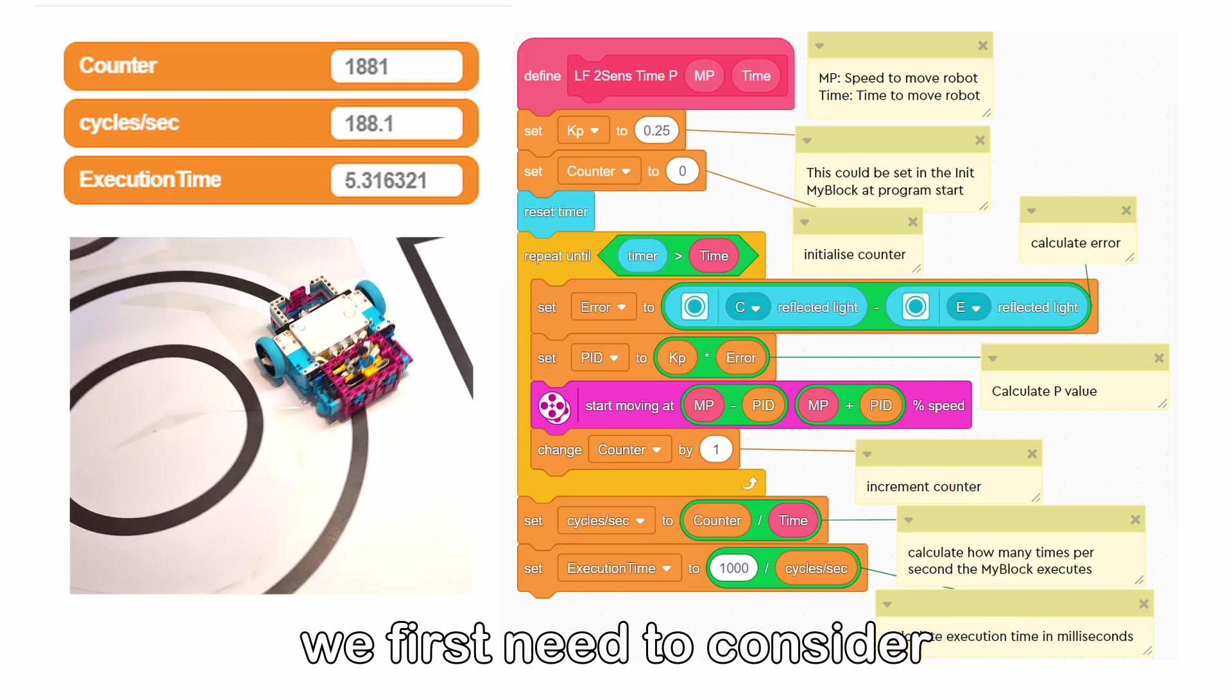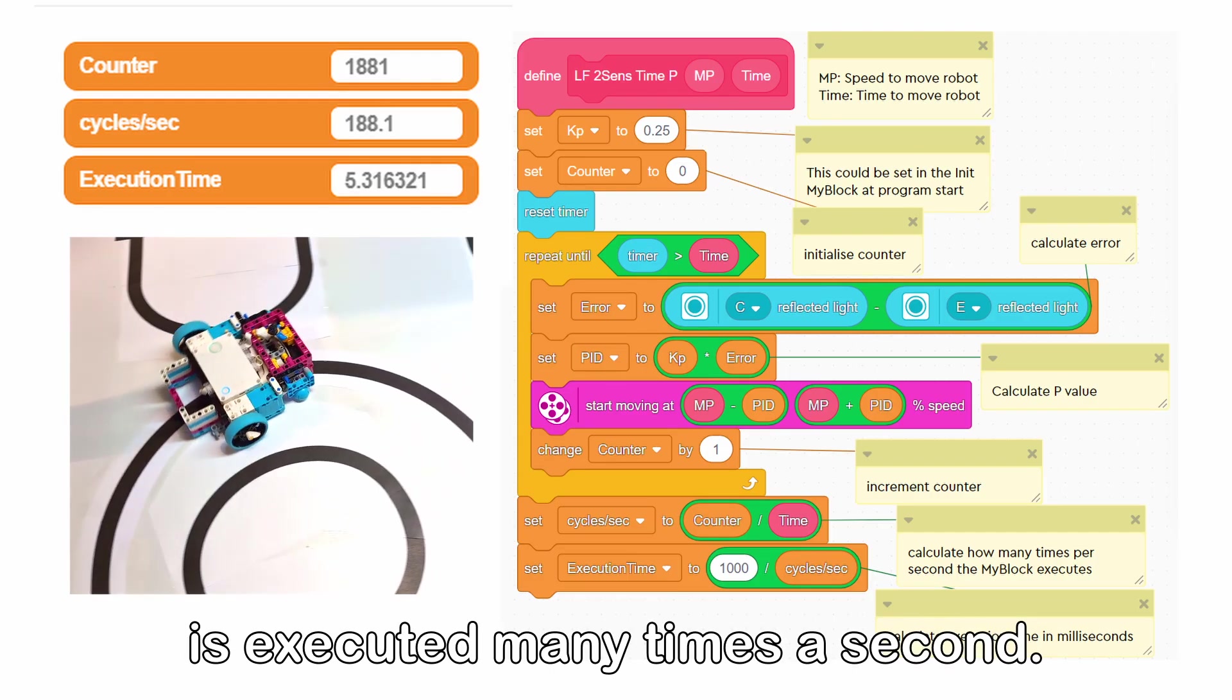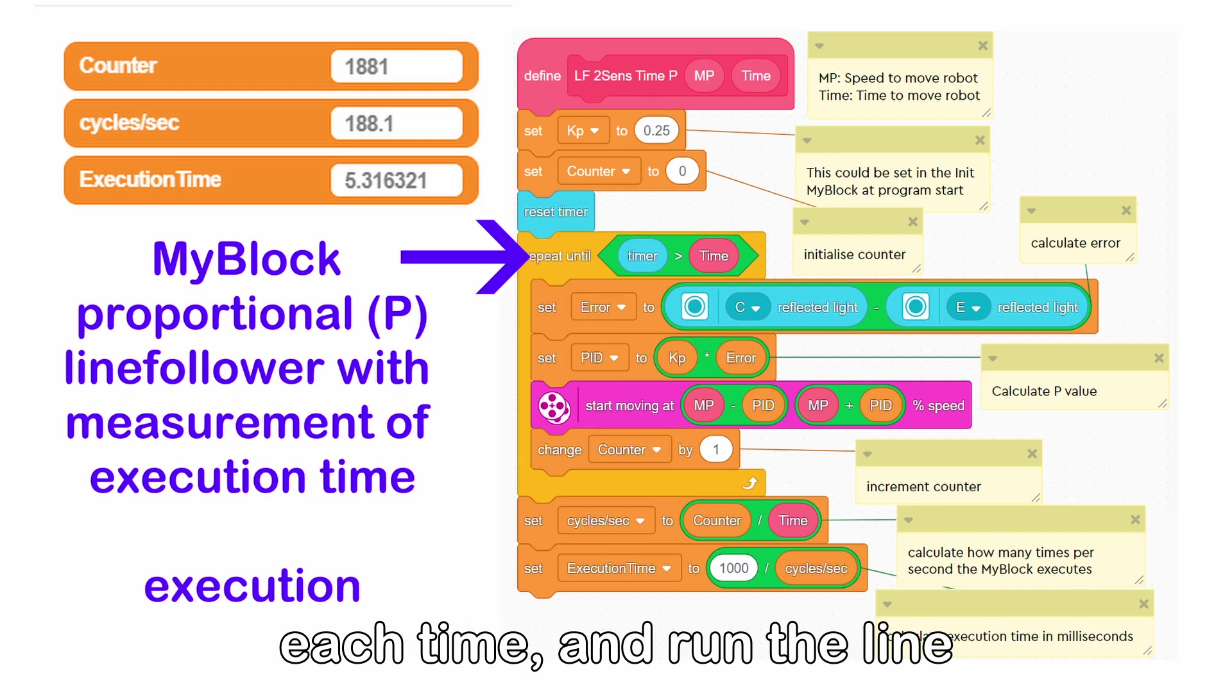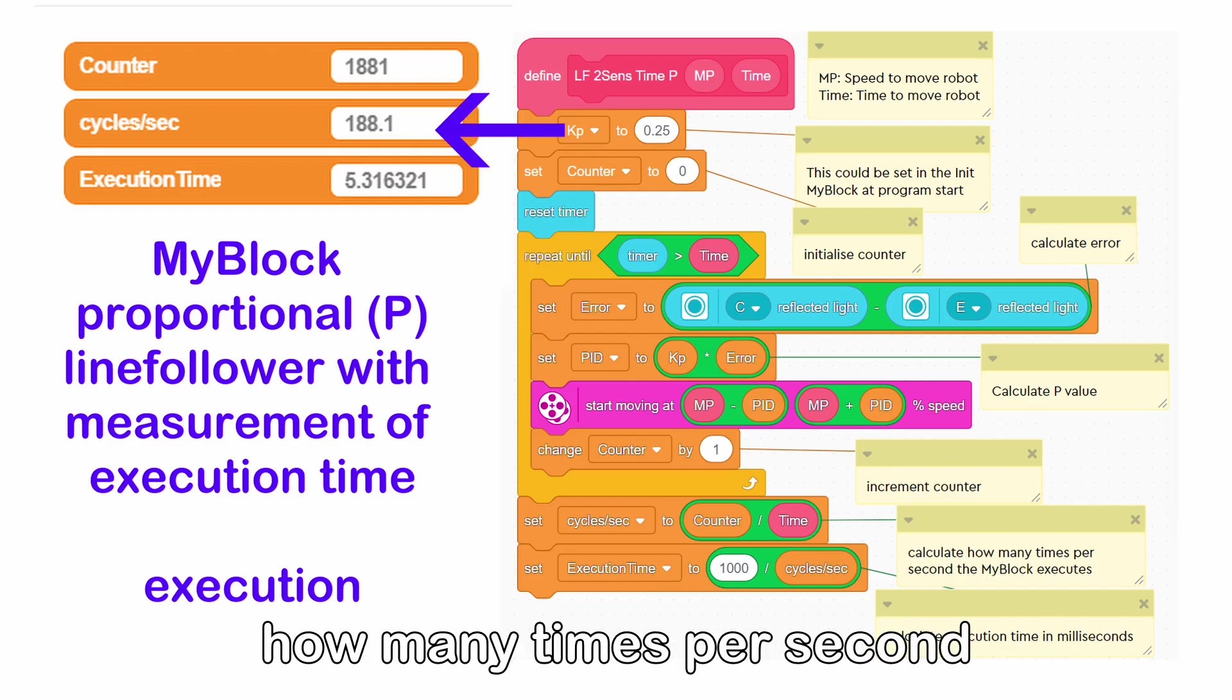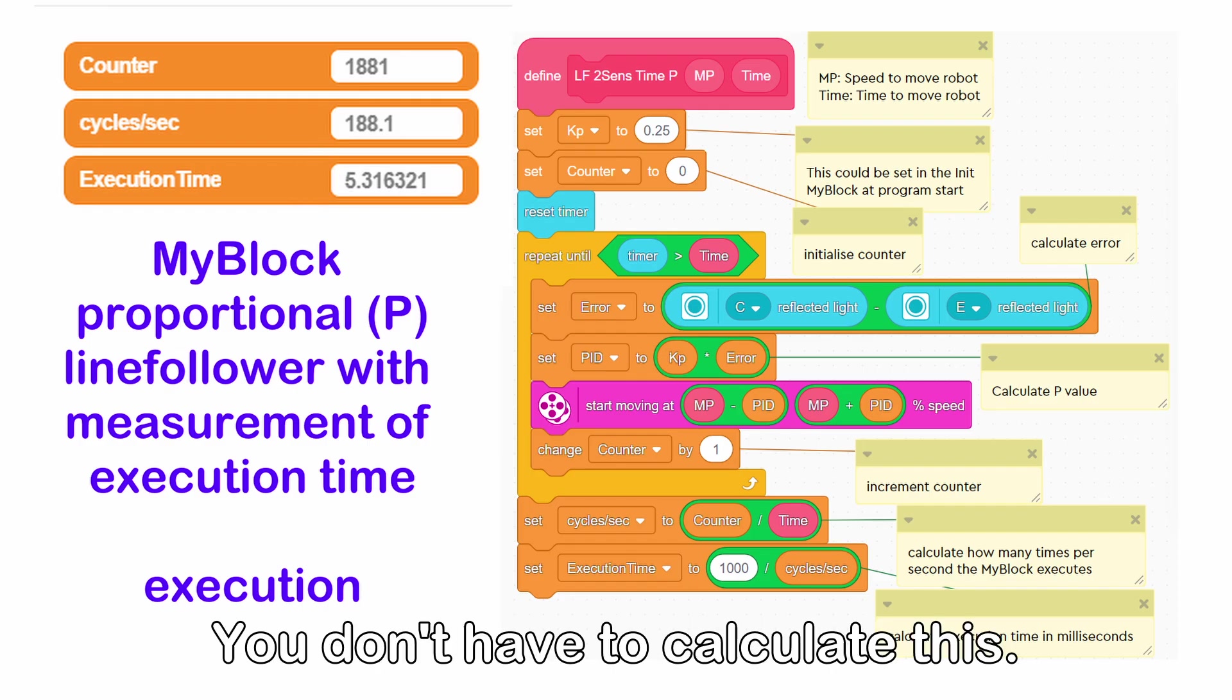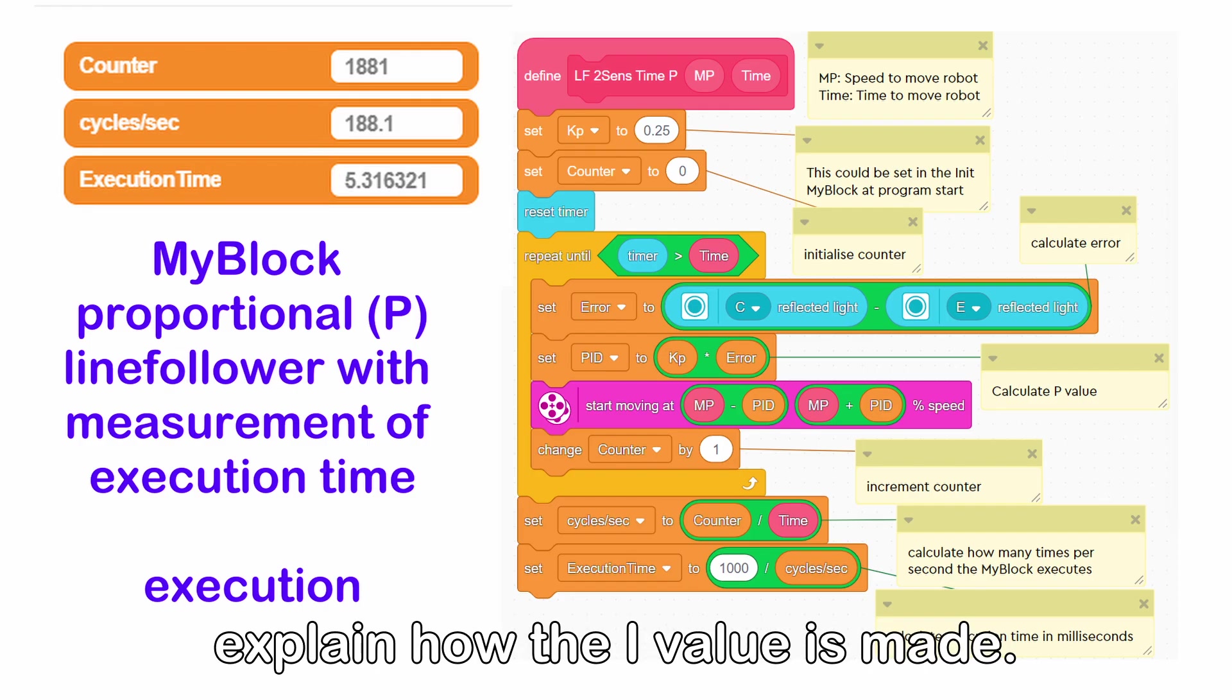To add the I or integral part of PID, we first need to consider that the line follower my block is executed many times a second. If we make a variable called counter, which increases by one each time, and run the line follower for 10 seconds, we can calculate how many times per second the my block executes. We see here 188 times per second, or an execution time of 5.3 milliseconds, which is quite fast. You don't have to calculate this. I have only done it to explain how the I value is made.